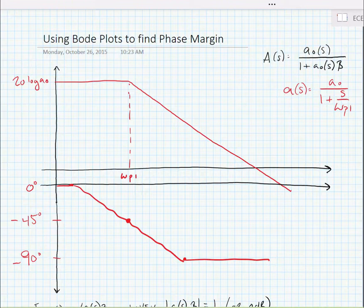So our phase response should look something like this if we're using our straight line approximation. Of course we know that really it's an arc tangent and not a straight line.